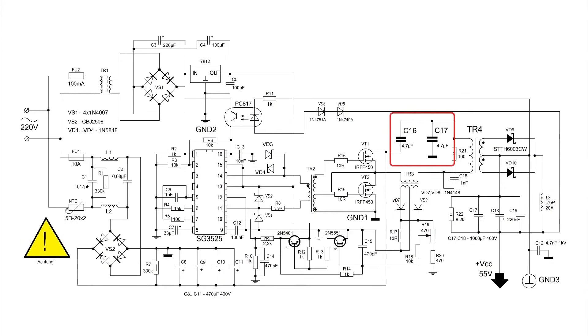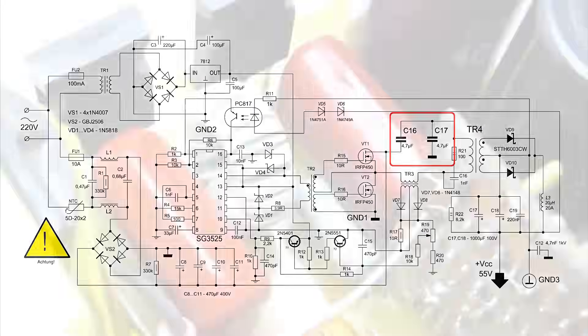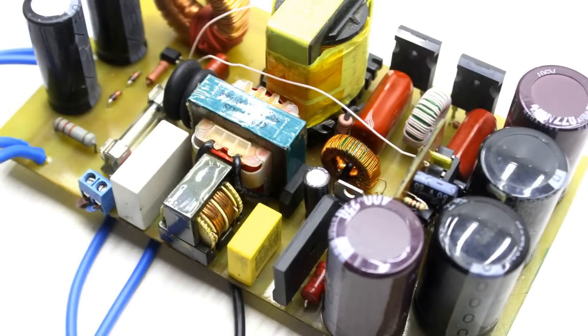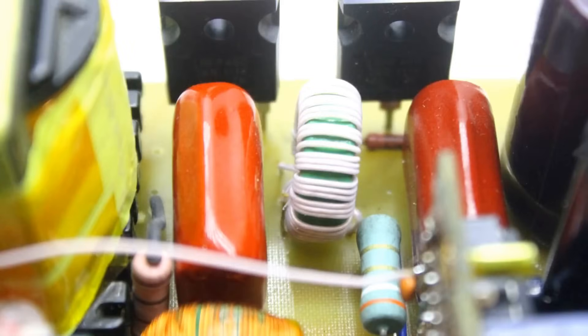Capacitors C16 and C17 are the capacitances of the half-bridge. Essentially, the operation of the circuit is based on the discharge of these capacitors' capacitances to the primary winding of the transformer and the field effect switches, by switching, provide the charging and subsequent discharging of these capacitors.